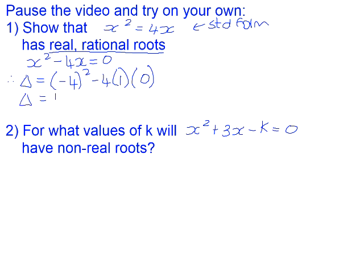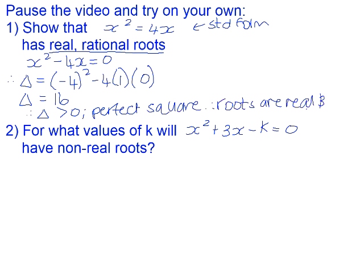And (-4)² is positive 16. So therefore, the discriminant is positive and a perfect square, so therefore the roots are real and rational.